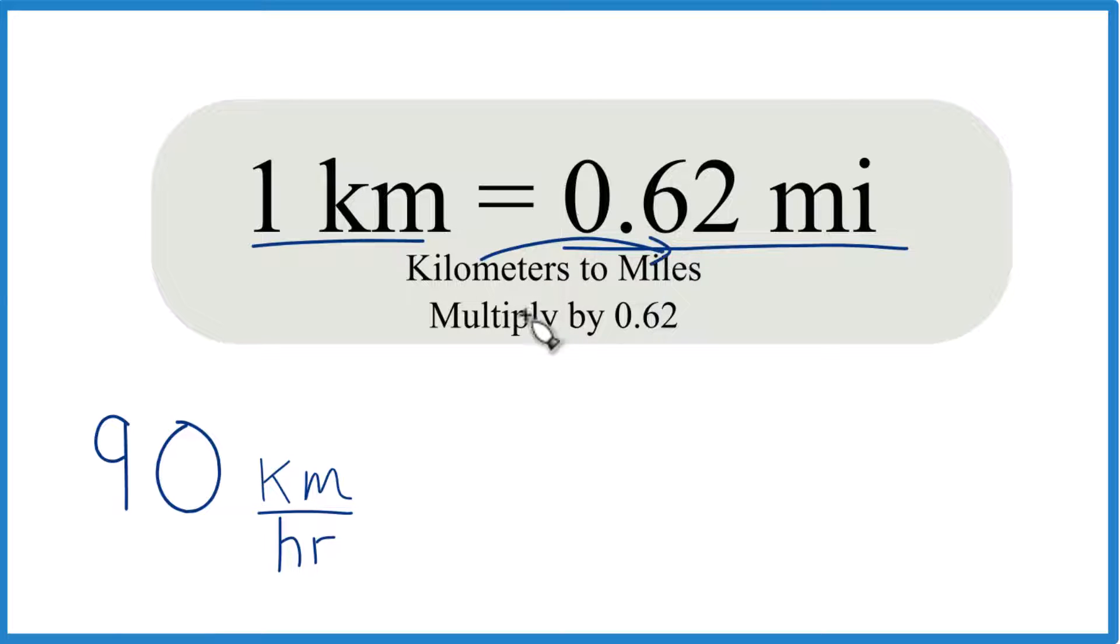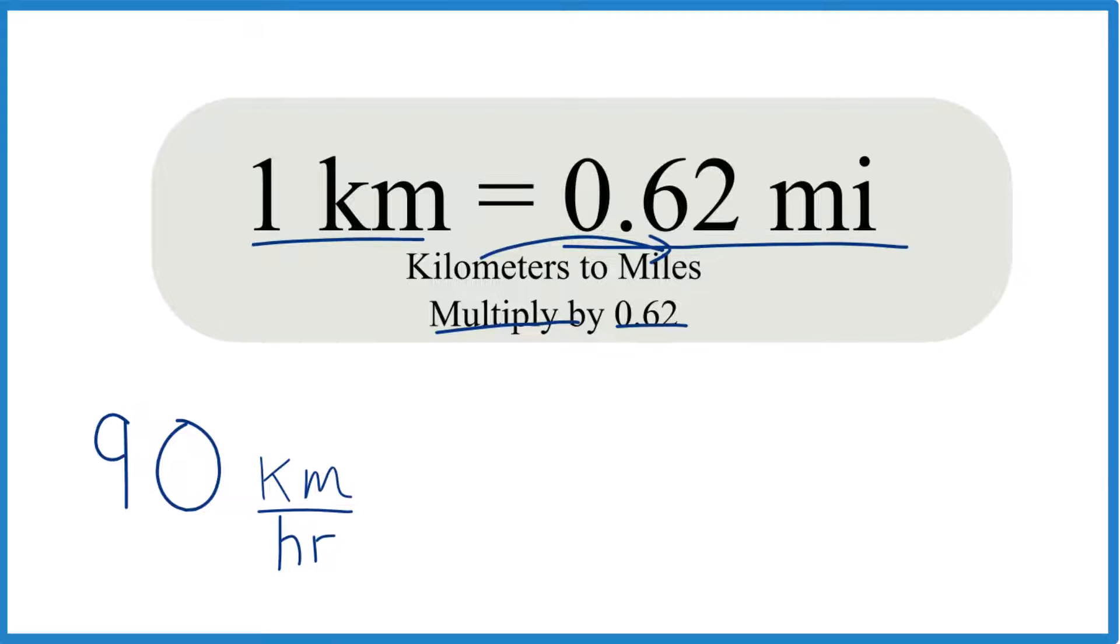When we go from kilometers to miles here, we're going to just multiply by 0.62. So we have our 90 kilometers per hour, and we multiply by 0.62. That will give us miles per hour.